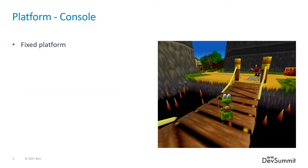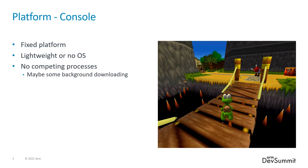Console is probably the easiest platform to optimise for. The platform itself is fixed — all of the hardware is the same, or with a limited number of variations. There is no OS getting in the way, and there are no competing apps running in the background stealing CPU cycles. You might have some simple settings for controls or volume, but nothing related to performance.